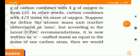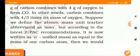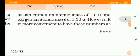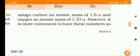Suppose we are defining an atomic mass unit with the carbon atom's mass as the reference. We assigned carbon its atomic mass as 1.0 unit and oxygen an atomic mass of 1.33 unit. The ratio of carbon to oxygen is 4/3, so dividing gives us 1.0 for carbon and 1.33 for oxygen.